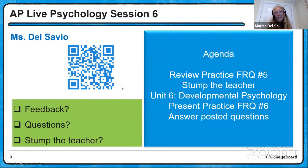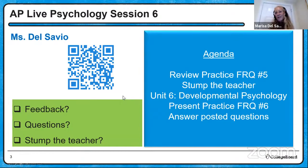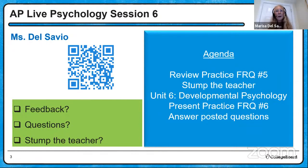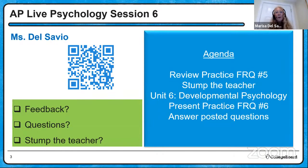This is AP Live Psychology Session 6. There is the QR code. For those of you new to this, if you scan that QR code, you'll be able to give us feedback, ask questions, and participate in Stump the Teacher, where you give us three completely unrelated AP Psychology concepts and see if we can loop them all together. We'll start with Dr. Swope's FRQ from yesterday's memory unit, then move to Stump the Teacher, go into Unit 6 Developmental Psychology, present a practice FRQ, and answer questions posted over the last couple of days.